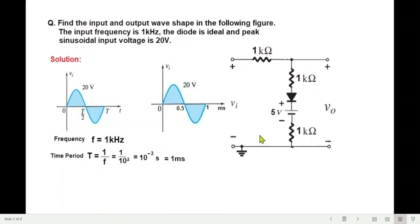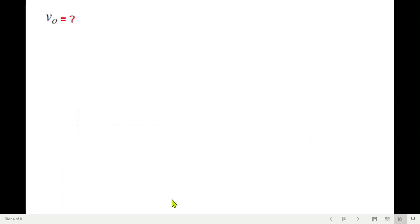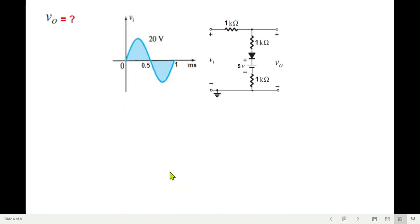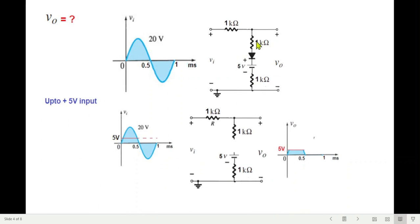Now there will be three stages. First of all as we said that up to 5 volt, up to 5 volt this circuit will remain open circuit. So let's see, up to plus 5 volt this will remain open circuit and whatever is at the input that will be at the output. So the input is up to 5 volt so that will be at the output, that is the first part.